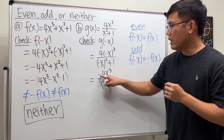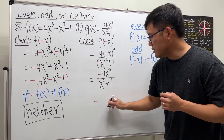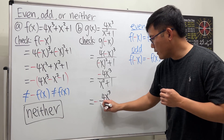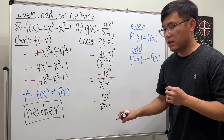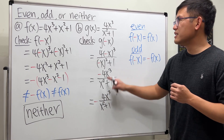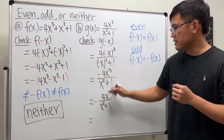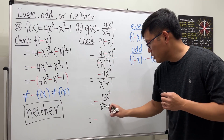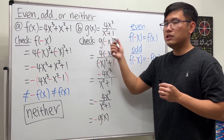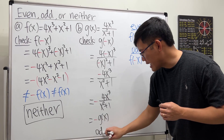We can pull the negative to the front, giving us negative times 4x to the third power over x squared plus 1. That expression in parentheses is the same as the original g of x. Therefore, g of negative x equals negative g of x, which means the function g is odd.